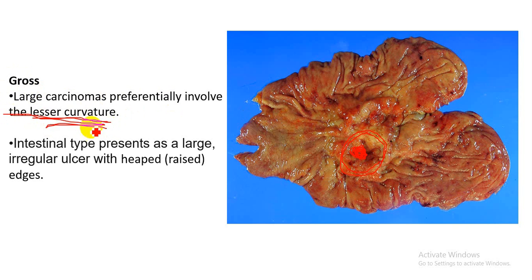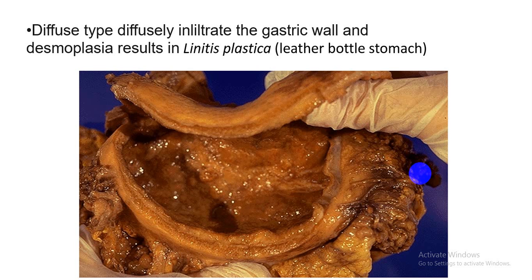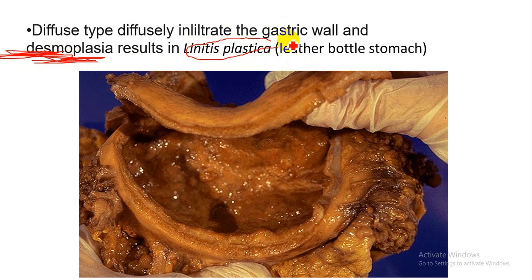The diffuse type infiltrates the gastric wall diffusely, and the stroma of the gastric wall shows a desmoplastic response. Because of this desmoplastic response, the stomach appears as a leather bottle — this is known as linitis plastica. You can see the leather bottle appearance in this gross image, which is a very high-yield point.